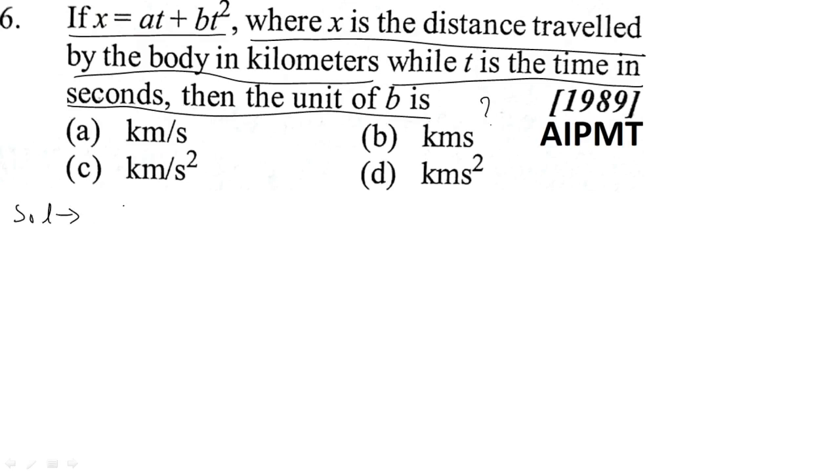Now, solving this question, we know from the rules of units and dimensions that quantities being added must be in the same unit. So, in x equals at plus bt squared, the terms at, bt squared, and x all should be in the same unit, which is kilometers—the unit of distance.